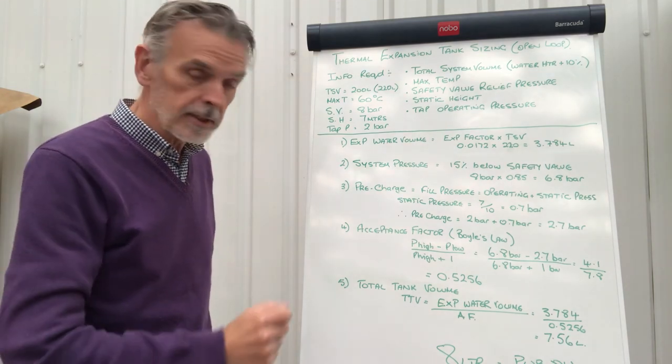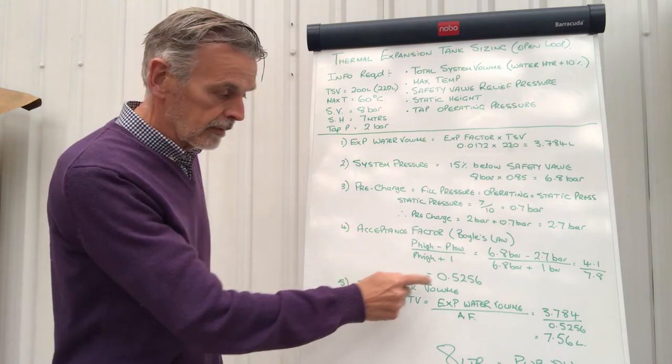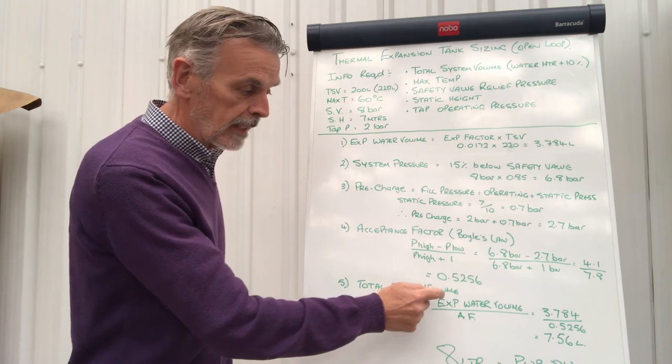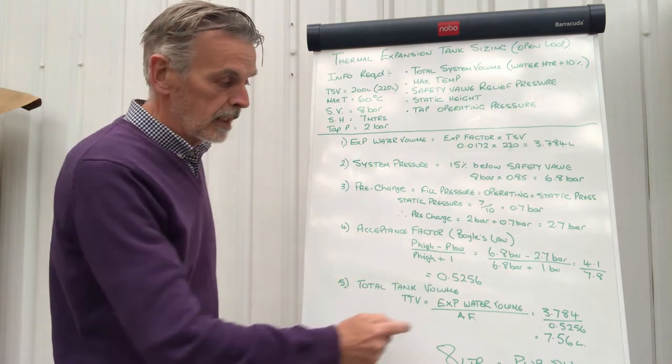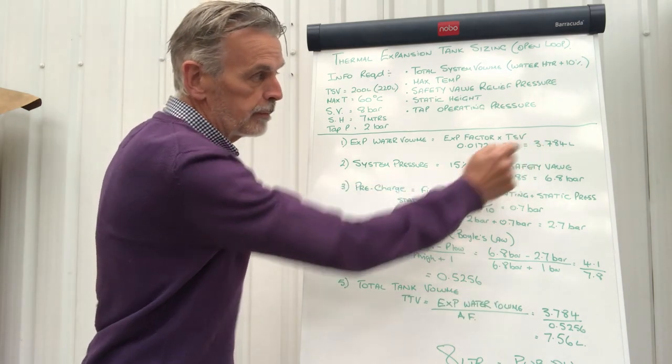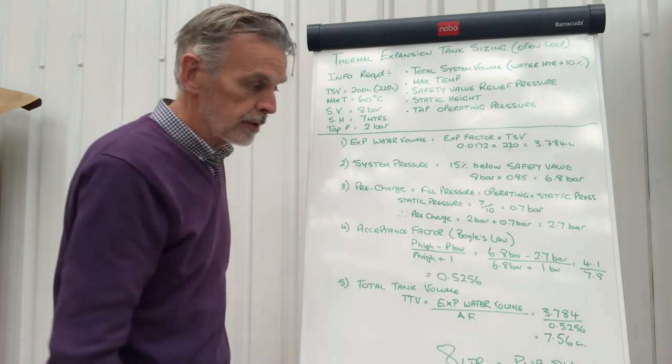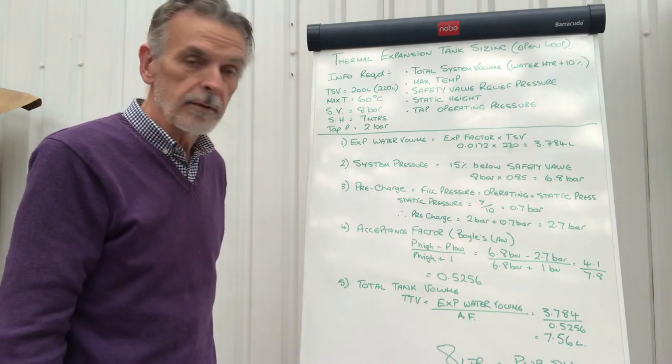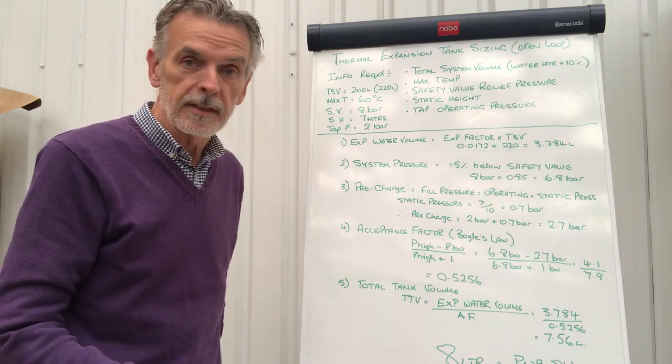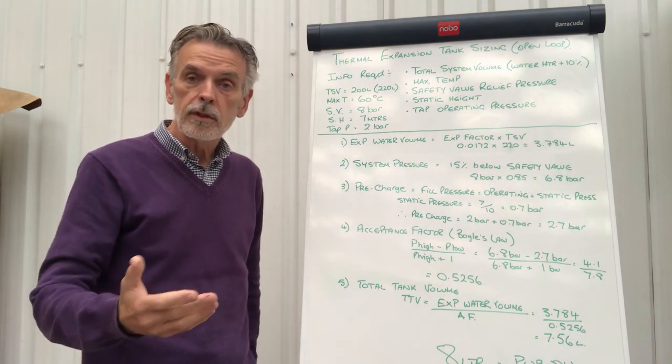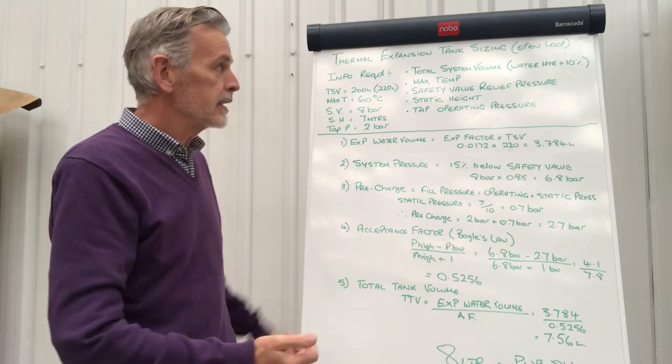Final calculation now to get your final tank size. And the total tank volume is the expanded water volume divided by the acceptance factor. And the expanded water volume of 3.784 divided by the acceptance factor of 0.5256 gives you a tank size, total tank volume, of 7.56 litres. We would always go, you should always go one size higher than that, so that would be an 8 litre tank.